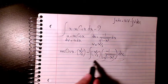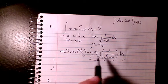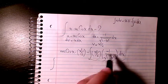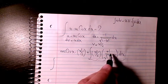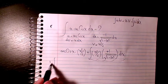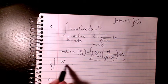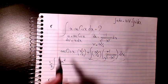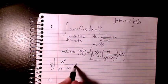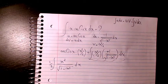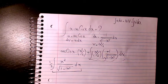Now let me focus on this remaining integral. The two negatives cancel out, so it becomes positive, and the 1/2 sits outside. It becomes the integral of x squared divided by the square root of (1 minus x squared) dx. Now I want to find this integration.